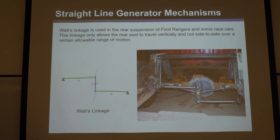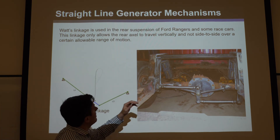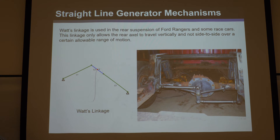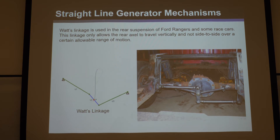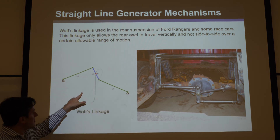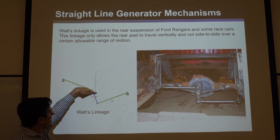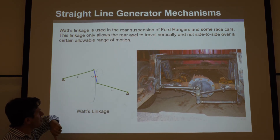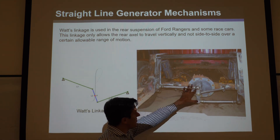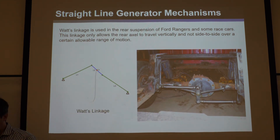The Watt's linkage is a compact linkage used in cars — for example in the rear suspension of Ford Rangers and some race cars. It allows the rear axle to travel vertically without moving side to side over an allowable range of motion. Beyond that range it starts to deviate, but within the range it guides a straight line very well with a simple design.